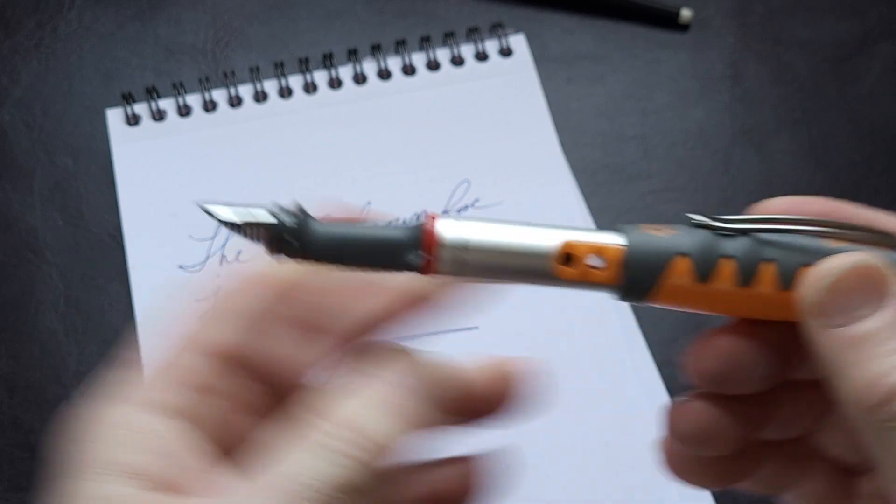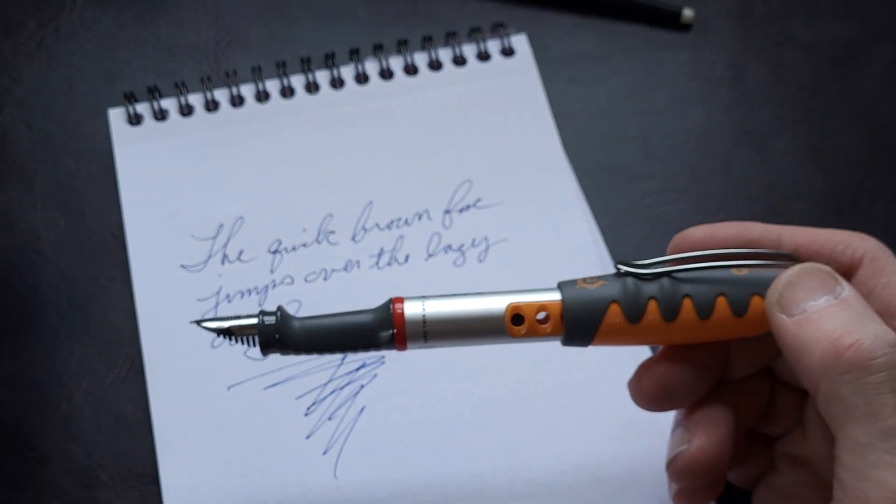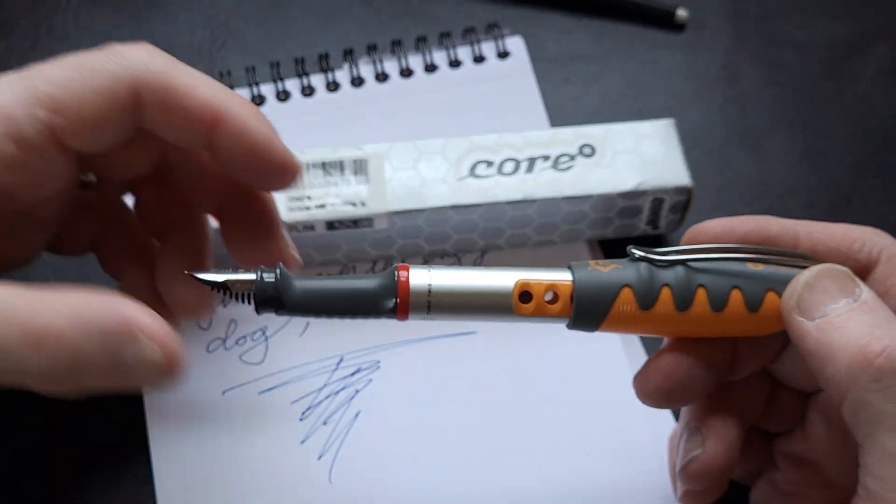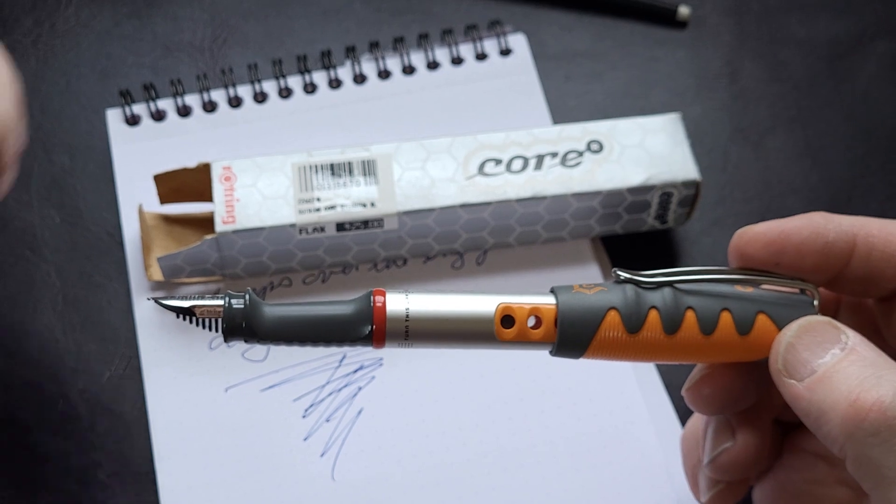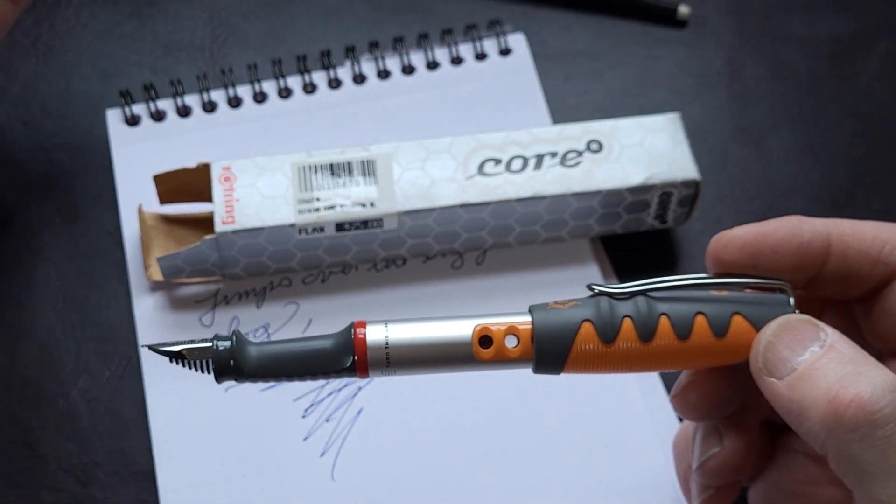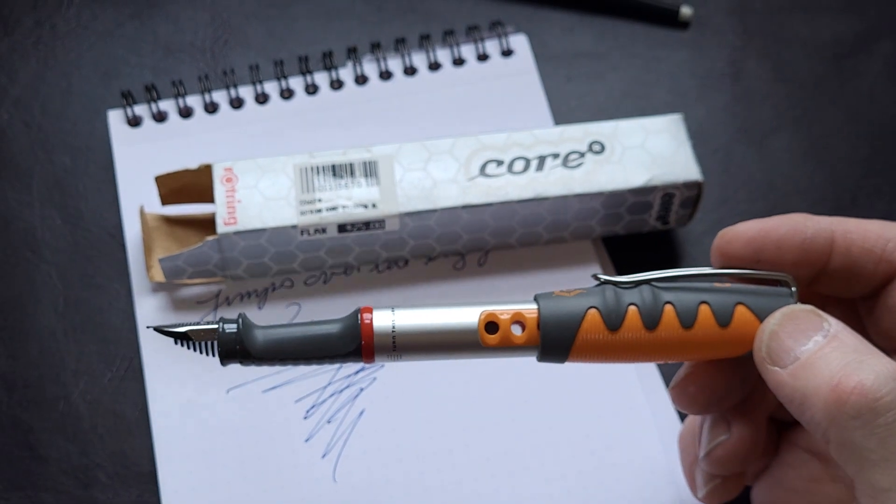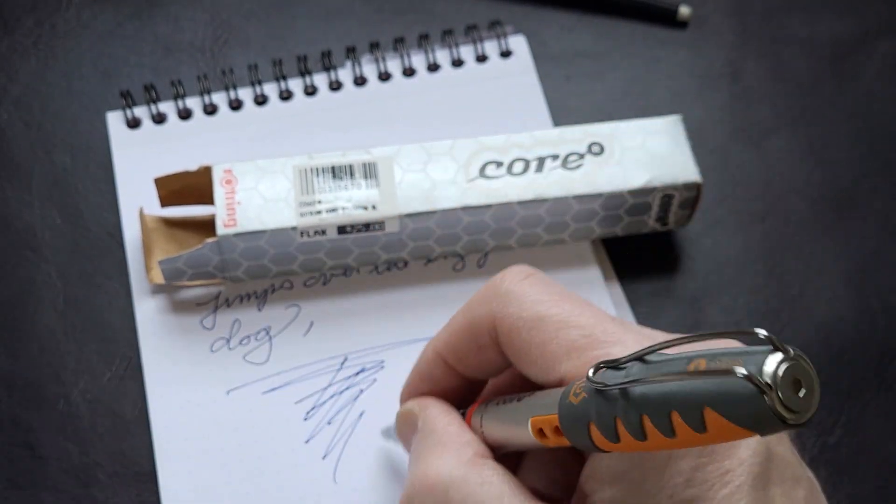So yes, all in all, I would say the Rotring Core is a unique pen. It's well-made, sturdy, colorful, fun. It is very fun, surprisingly comfortable to hold and an excellent writer.